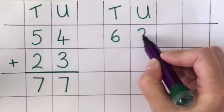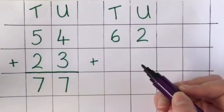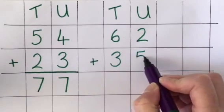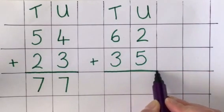which is 6 tens and 2 units, and 35, 3 tens and 5 units. There's my answer line.